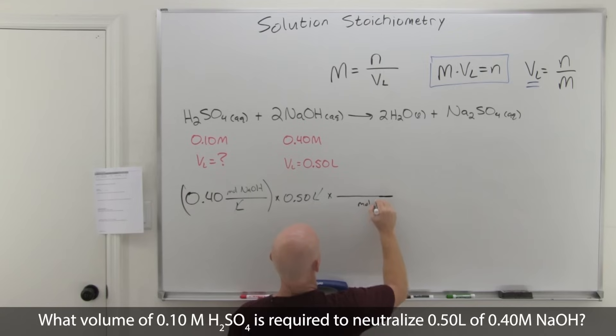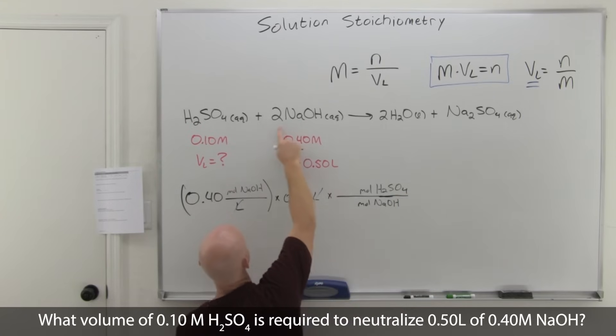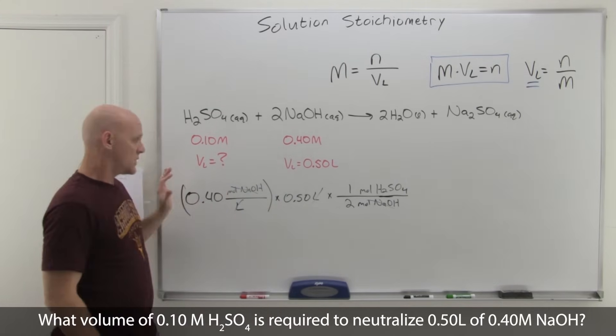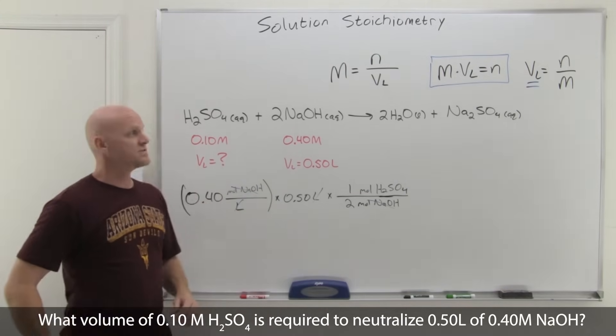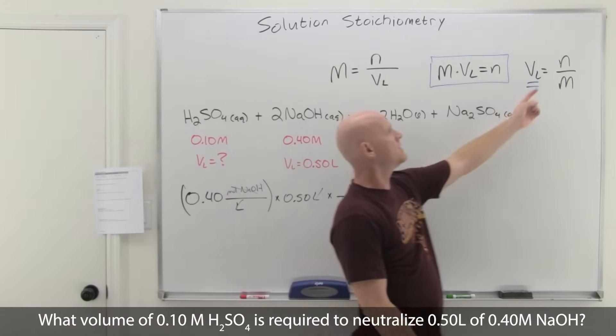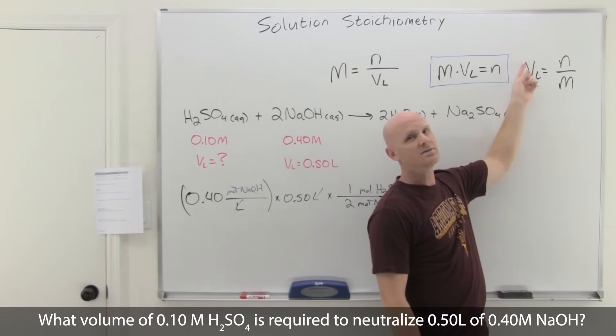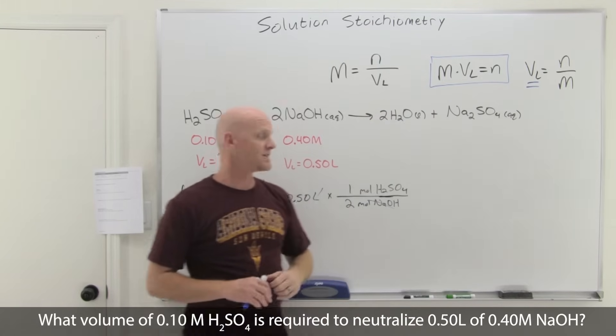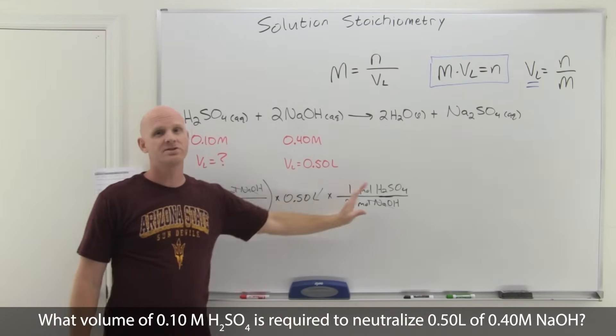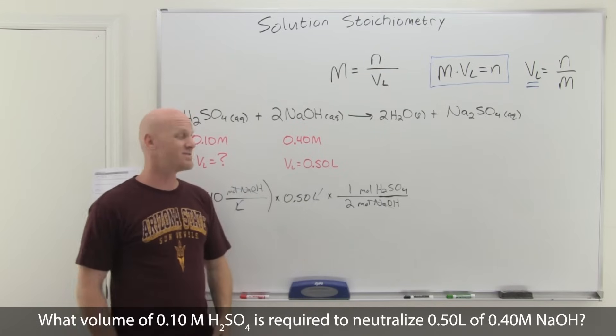That gets us moles of NaOH left. But then we can use a mole-to-mole ratio. We'll put moles of NaOH in the denominator so they cancel, moles of H2SO4 in the numerator. That mole-to-mole ratio comes from the coefficients in the balanced chemical reaction: two moles of NaOH, one mole of H2SO4. Now our moles of NaOH are going to cancel, and we'll have an answer in moles of H2SO4. Once we work this out and get the moles of H2SO4, we already know the molarity. Once we know both the moles and the molarity, we can solve for the volume.